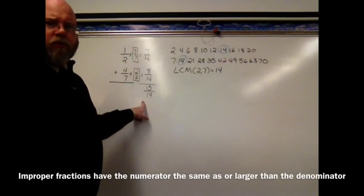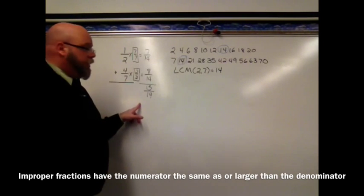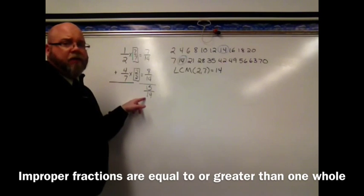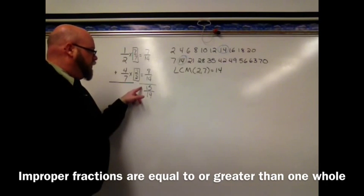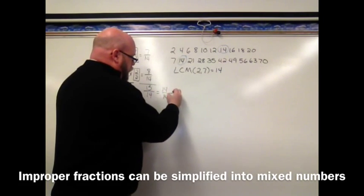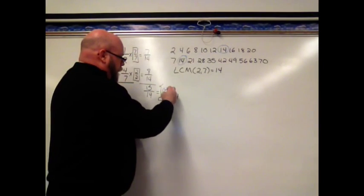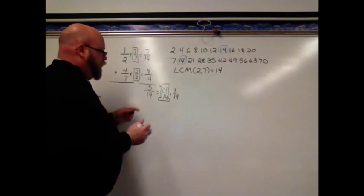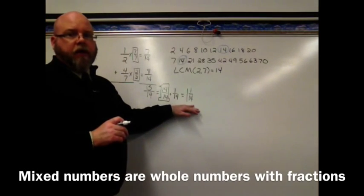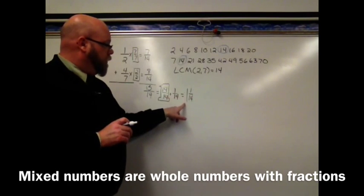Now, this is unusual. The numerator here is larger than the denominator. That means that this fraction is more than 1. It's larger than 1 whole. We call this an improper fraction. Anytime the numerator is larger than the denominator, we have an improper fraction. 15 14ths really is kind of like saying 14 14ths plus 1 14th. Well, we know that 14 14ths is the same as 1 whole. So 15 14ths could be said 1 and 1 14th. And we call this simplifying the improper fraction, and we get a result that we call a mixed number. A mixed number is a whole number and a fraction.